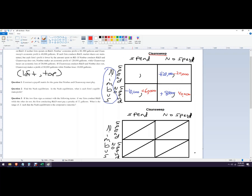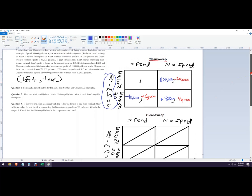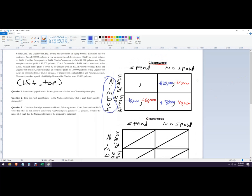And then if they both spend, we're going to go lower by the amount that it costs. So it costs, and it tells us up there a little bit, it costs 30,000. So then if Nimbus spends, we're going to take 30,000 minus this, so it would be 50,000. And then if Clean Sweep spends, it would be plus 10,000.